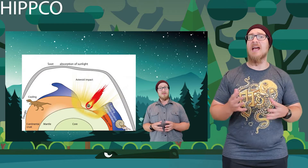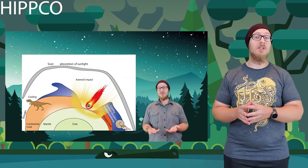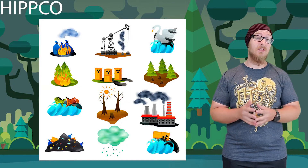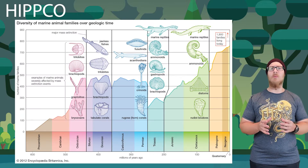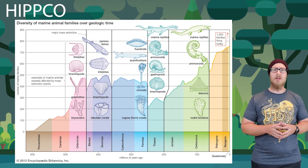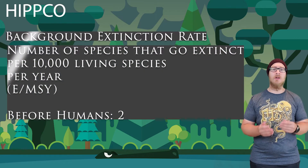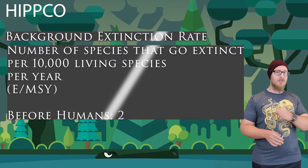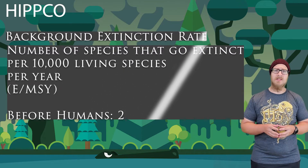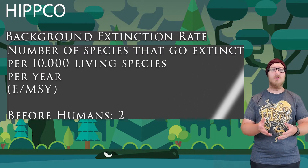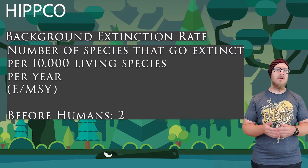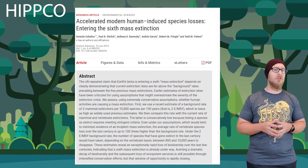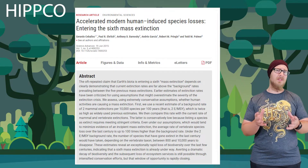In video five we discussed natural changes to biodiversity — primary and secondary succession, natural events that may lead to extinction, and evolution. In this video we look at how human activity is affecting biodiversity. Extinction is a normal process in Earth's biological history. The background extinction rate estimates the number of species that go extinct per 10,000 species every 100 years. Looking at the fossil record, scientists estimate this rate before humans to be about two. This figure is from a 2015 study published in Science Advances.